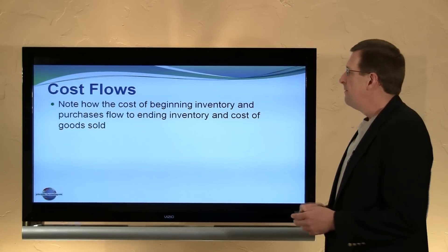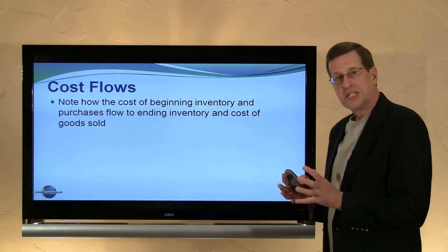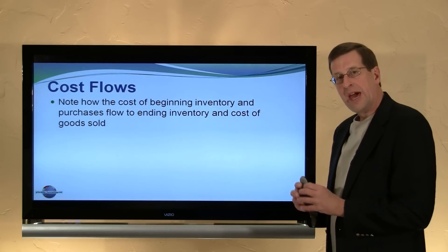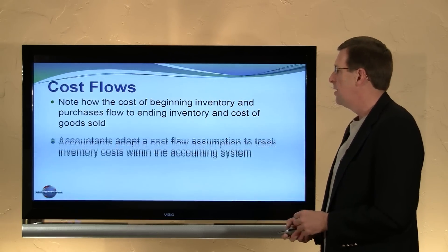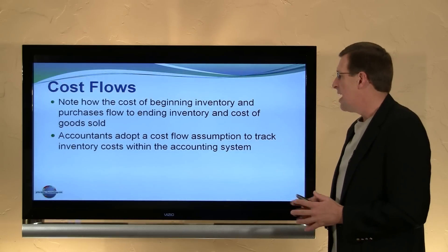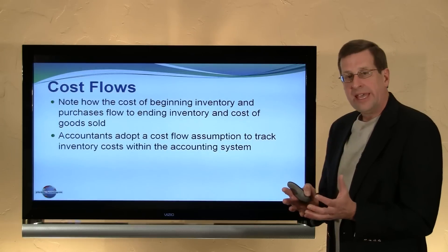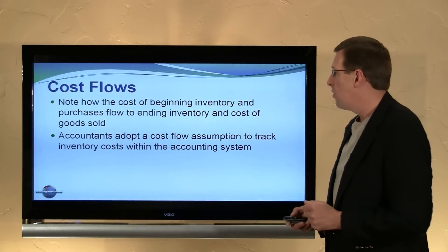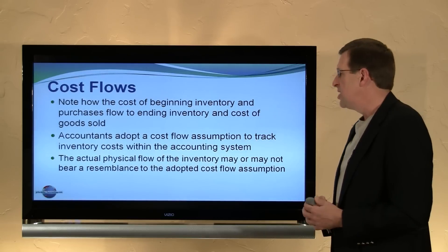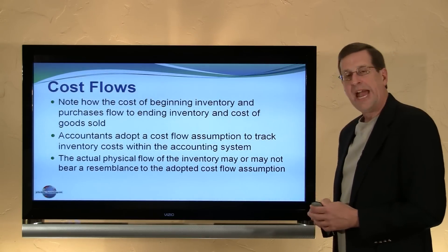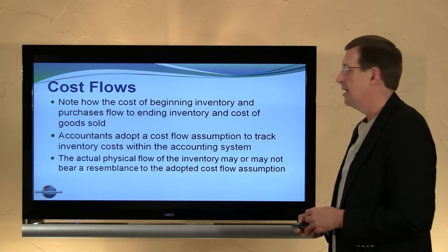To recap: first, beginning inventory and purchases give us cost of goods available for sale, and that cost must be allocated either to ending inventory or cost of goods sold. Second, accountants adopt a cost flow assumption — whether FIFO, LIFO, or average cost — to track inventory costs within the accounting system. Third, the adopted cost flow assumption need not bear any relation to the actual physical flow of goods; the costing method is independent of the physical flow of goods.